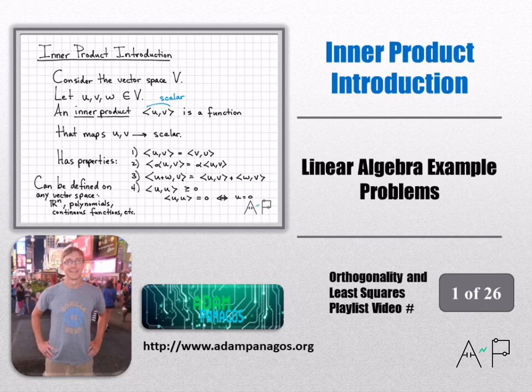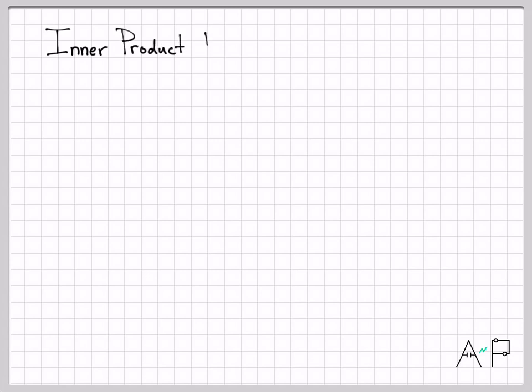This is the first video in a fairly long series about orthogonality and least squares. Towards the end of the series, we'll get to really neat concepts like the Gram-Schmidt algorithm, finding the least squares approximation or solution of systems that don't have a unique solution, finding orthonormal bases and projections, all kinds of great ideas. But before we get into those more advanced ideas, we need to build up some basic definitions, and that's what we're going to do right now.